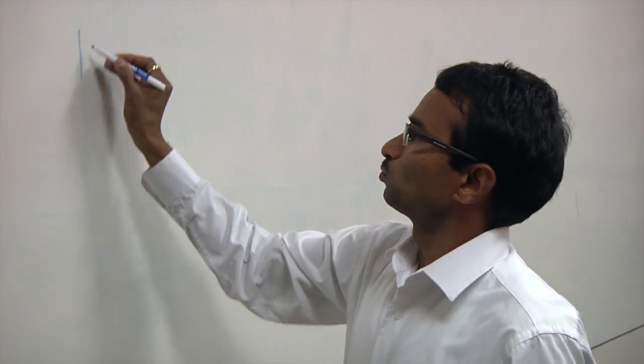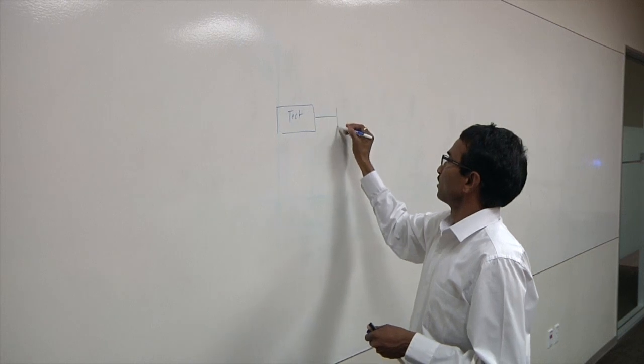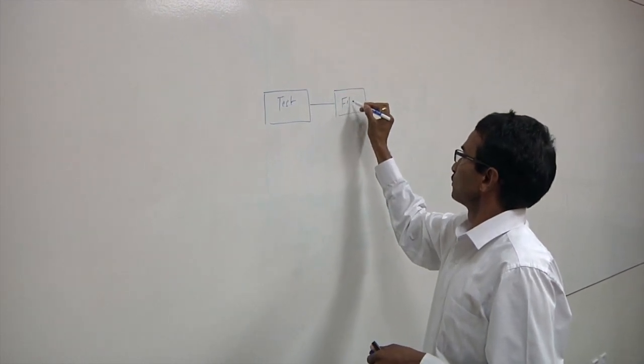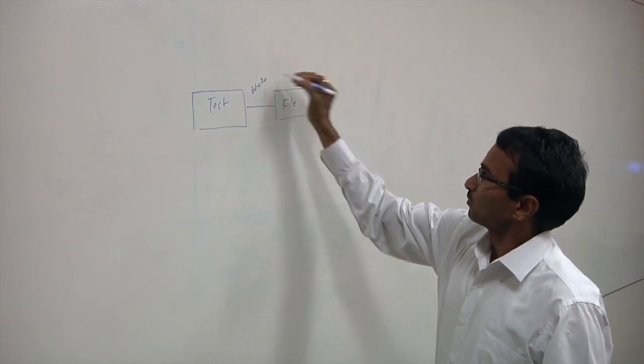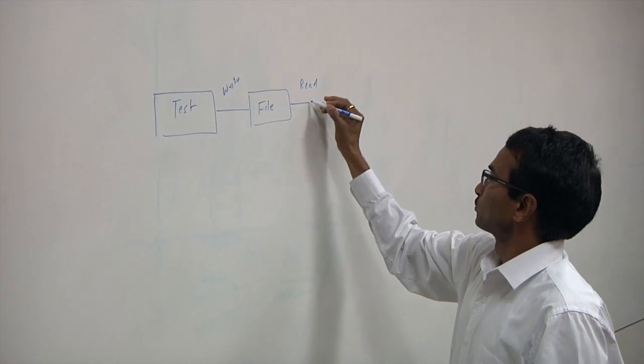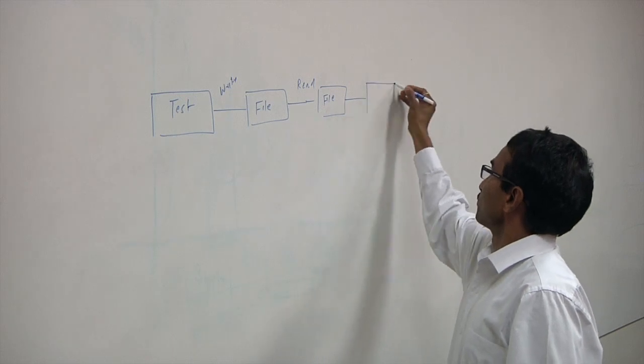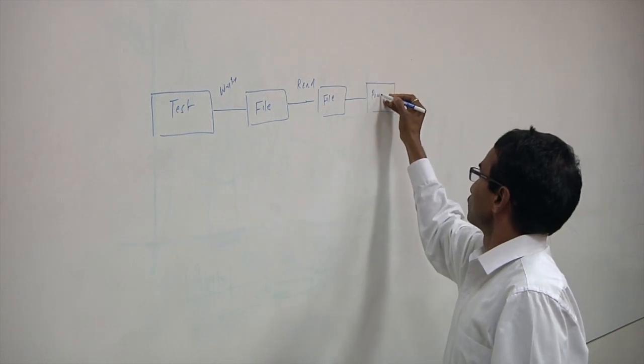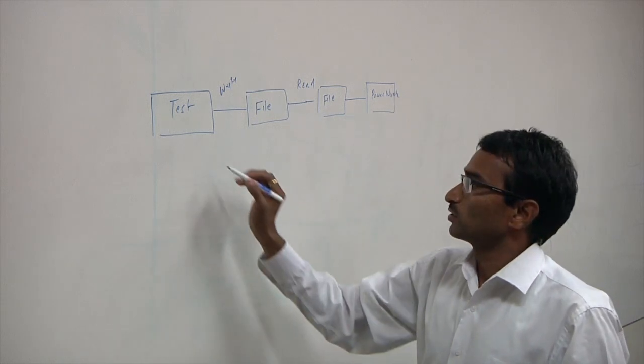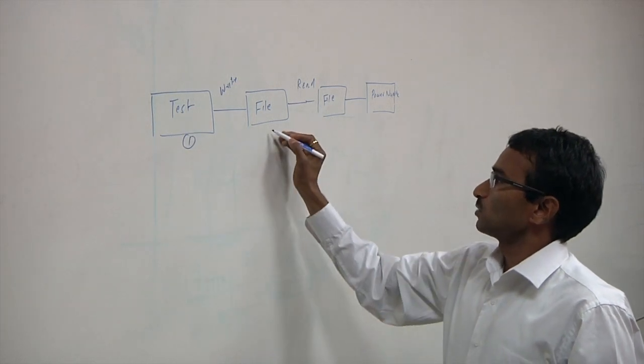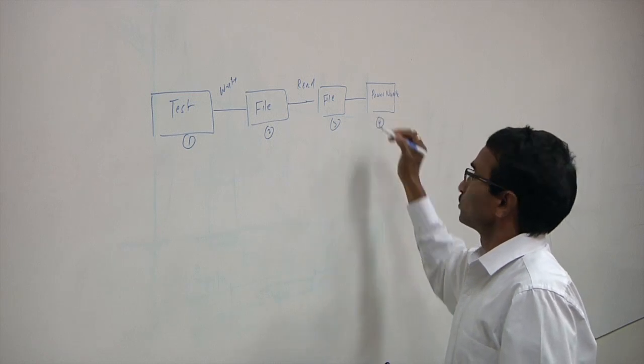So if you look at the flow, what happens is you run the functional test, so you run the test, and you generate a file. And so this is called writing the file. And then there is a file read. So power analysis tool is going to read that file. So if you look at this is the full step flow, step 1, you run the test, step 2 is you write the file, step 3 is you read the file, and step 4 is you generate the power number.